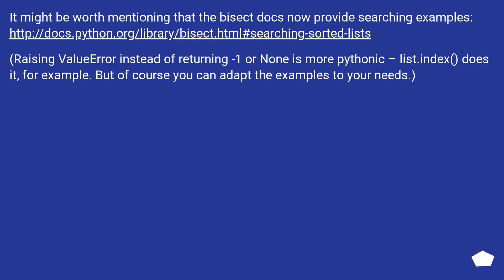It might be worth mentioning that the bisect docs now provide searching examples at a linked URL. Raising ValueError instead of returning minus one or none is more Pythonic — list.index does it, for example. But of course you can adapt the examples to your needs.